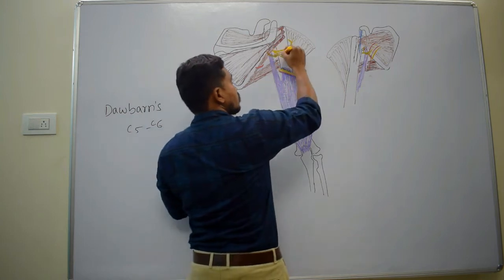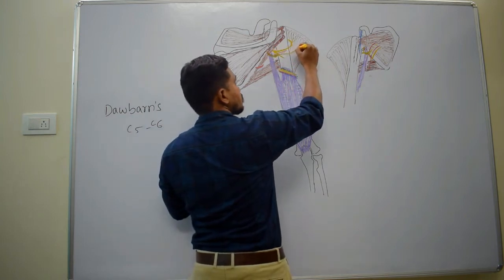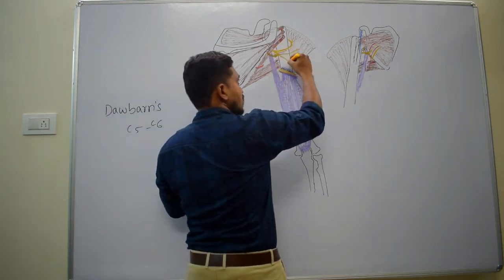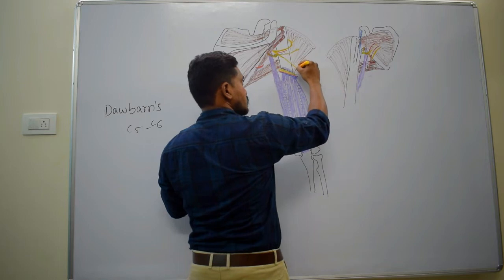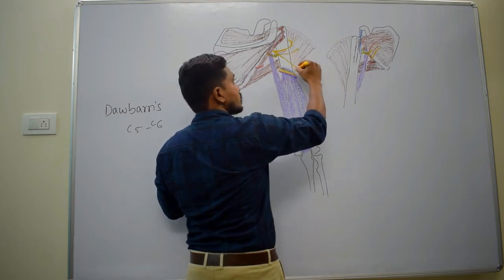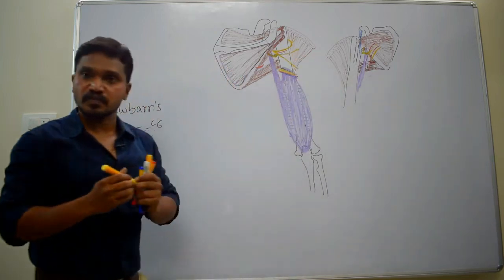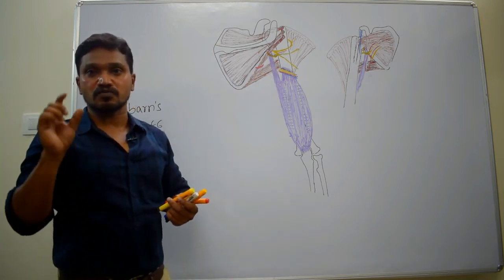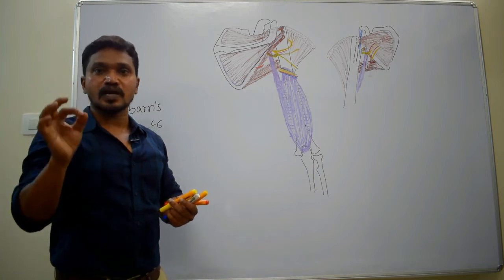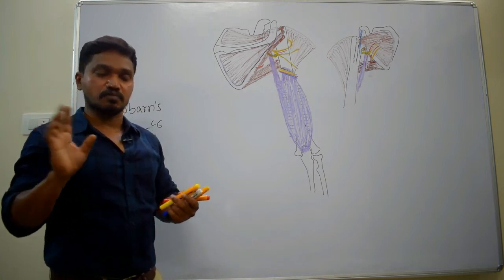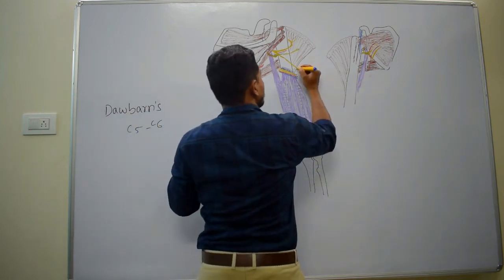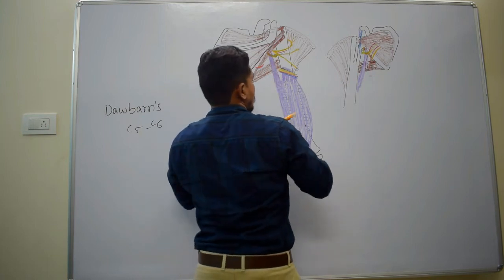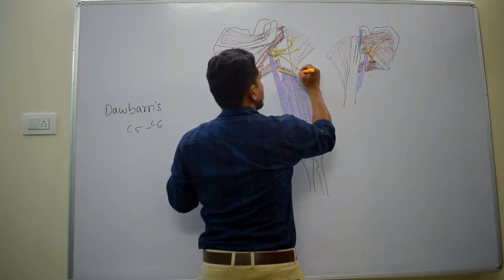The posterior division also gives a branch to the posterior part of the deltoid muscle. Then the continuation of the posterior division pierces the deep fascia at the posterior inferior part of the deltoid muscle, becomes cutaneous, and continues as the upper lateral cutaneous nerve of the arm.